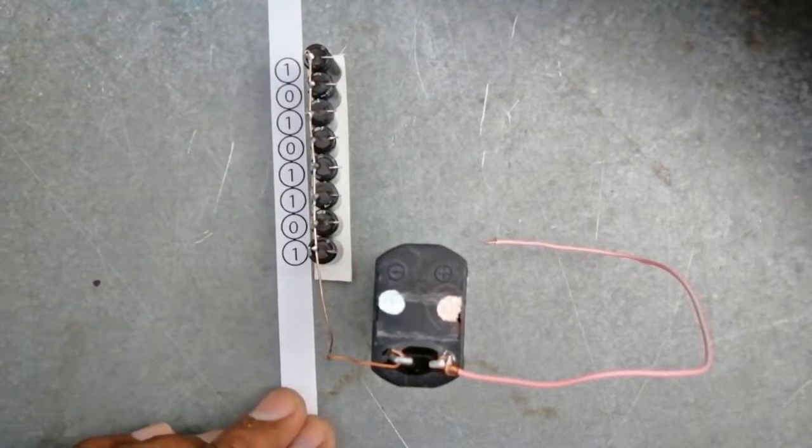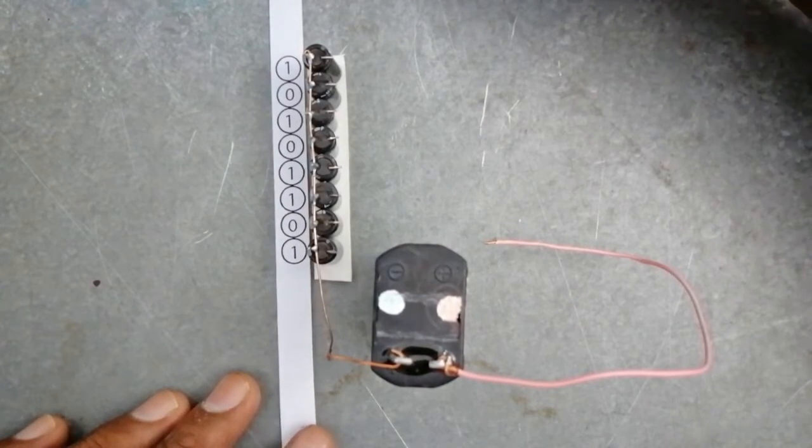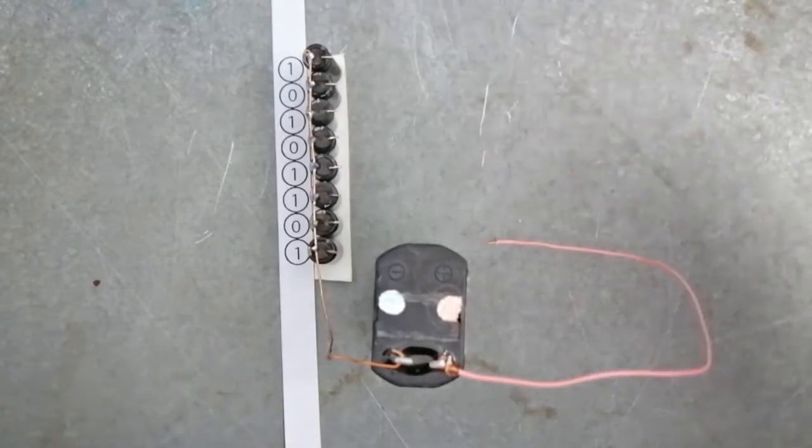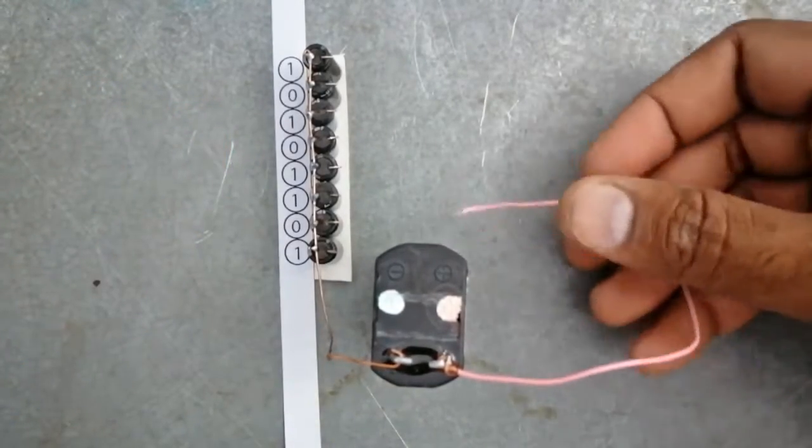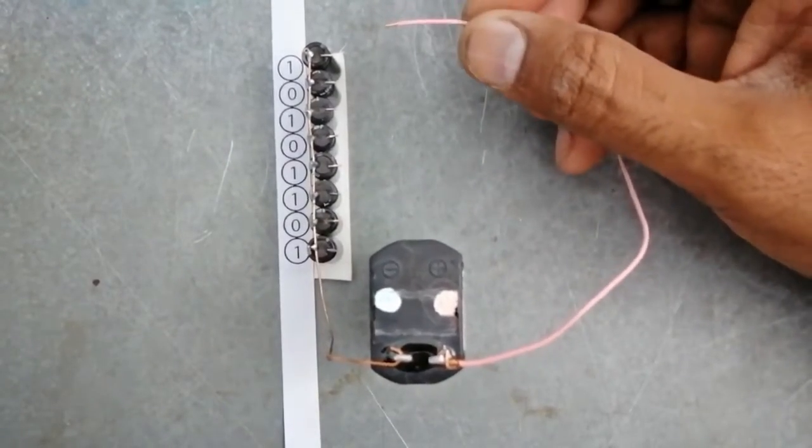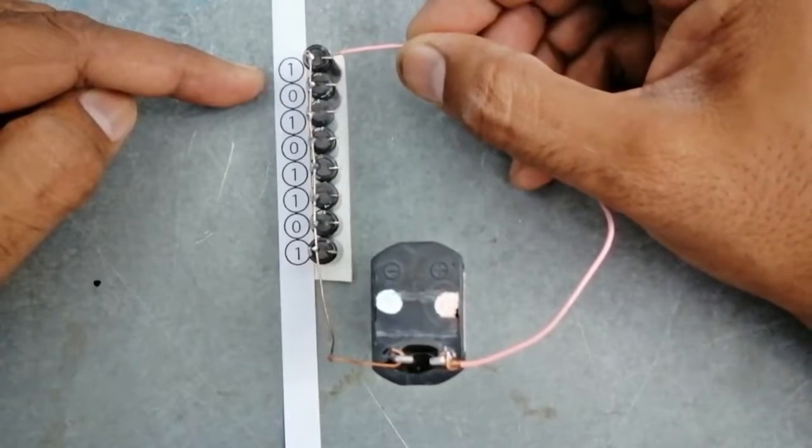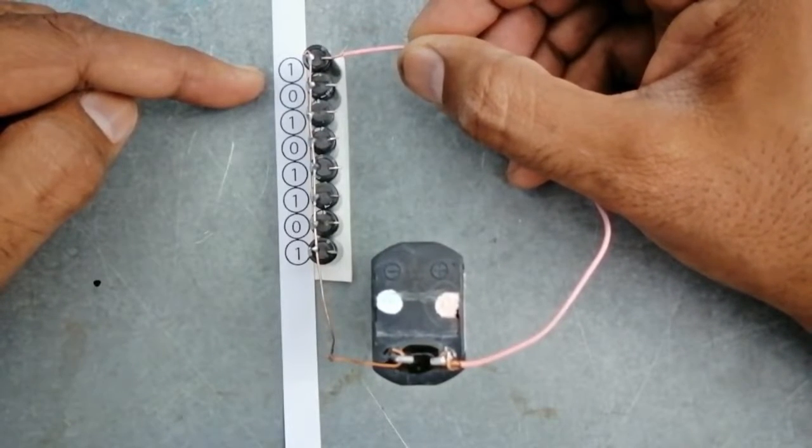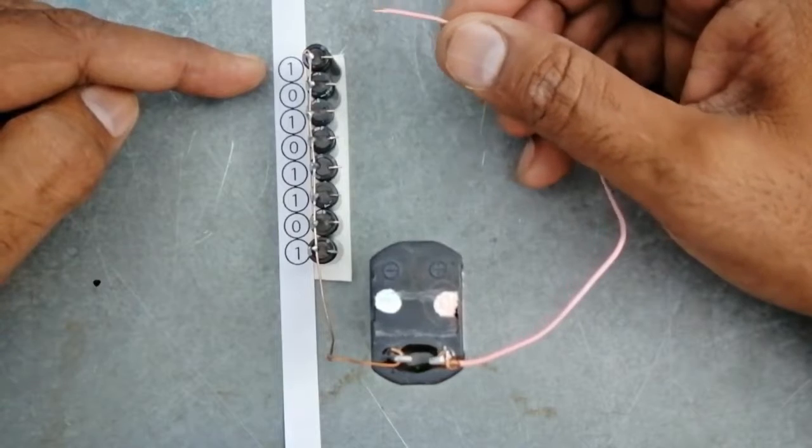Wow. Data is coming from CPU. It has arrived. Now we will write it. First value is one so we will charge the first capacitor. Let's attach the wire with it. One is now stored on it.